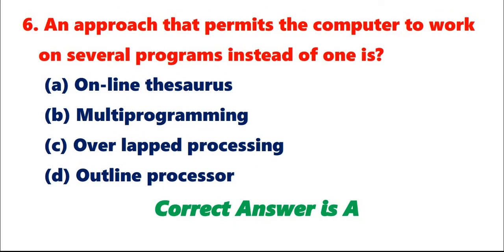Question 6: An approach that permits the computer to work on several programs instead of one is A. Online thesaurus. B. Multi programming. C. Overlapped processing. D. Outline processor. Correct answer is A.